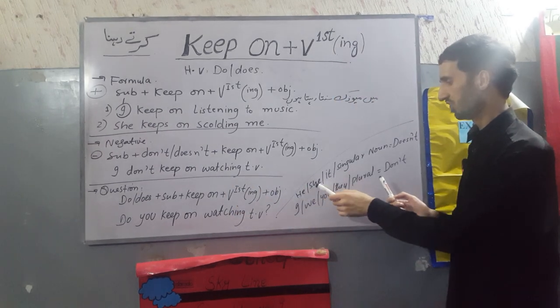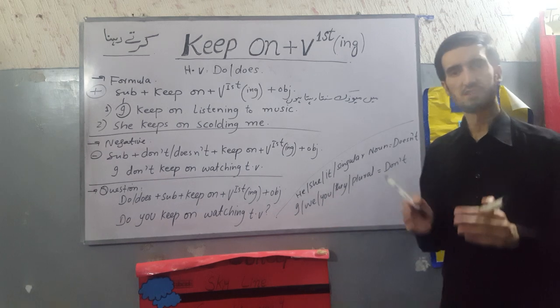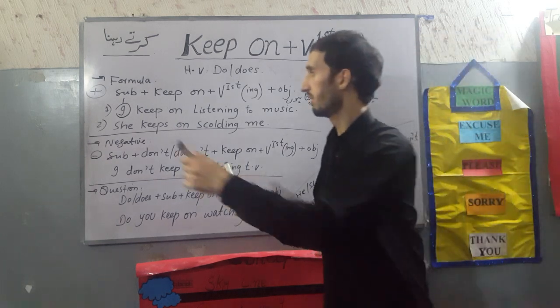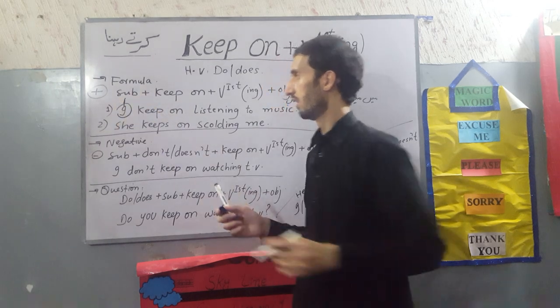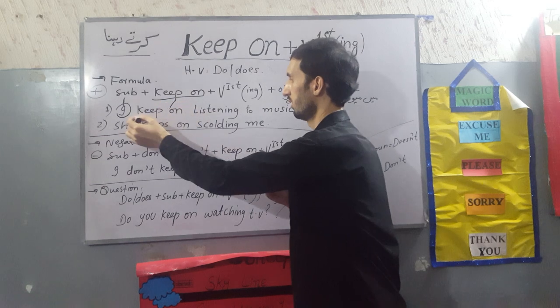These are all subjects: he, she, it, any name, I, we, you, they. These are all subjects. We have used subject first. After that, our structure is keep on, so we have used keep on.